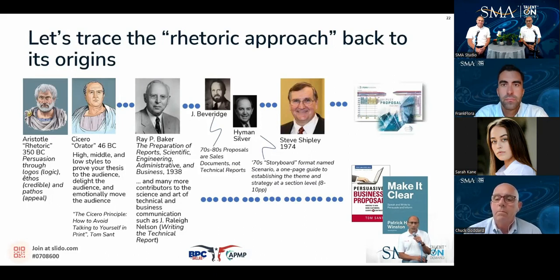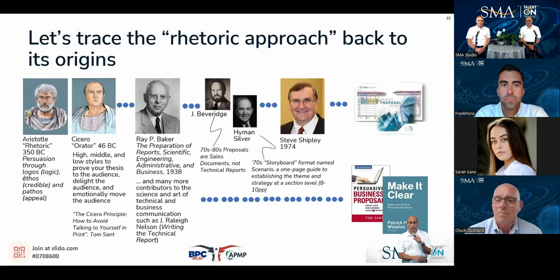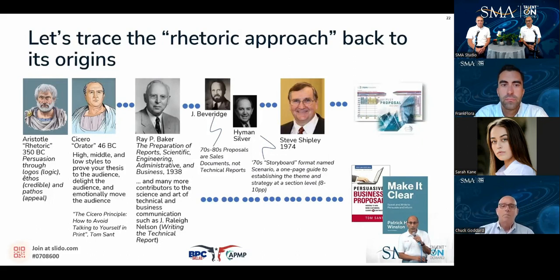Hyman Silver ran proposals at North American Rockwell. He was also a giant in the business, coming to prominence with their win of Space Shuttle and then Space Station Phase B — two huge, massively complex proposals. He later formed his own firm, HSA, which morphed into a technology training corporation. His approach, called Scenario, was the origin of storyboards in the Shipley process, incorporating requirements, themes, and strategy at the section level as a planning tool.